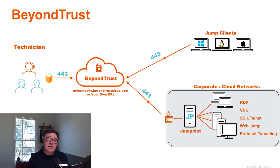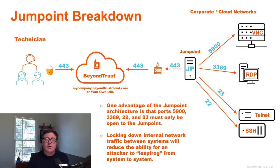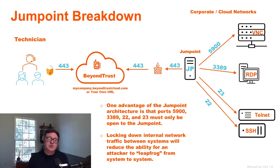The bastion host is facilitating that connection to the appliance so that the technician is able to work with these systems using these native protocols or types of connections. Let's take a deeper look at the ways that these connections happen and how the jump point acts as a bastion host. We see these different connections on the right-hand side — VNC, RDP, Telnet, SSH — and the respective ports that those would connect over to the jump point. Again, the jump point is connecting outbound back out to the appliance environment on port 443.